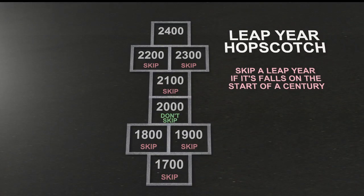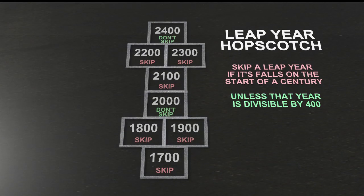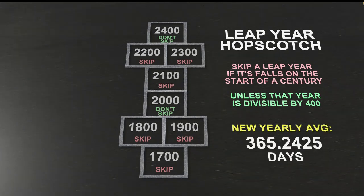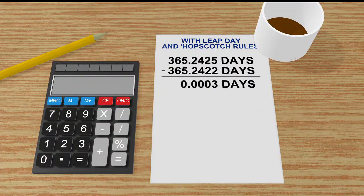So now we do leap year hopscotch. You skip a leap year if it falls on the start of a century, unless that year is divisible by 400 — because that adds up. And so the yearly average now is 365.2425.